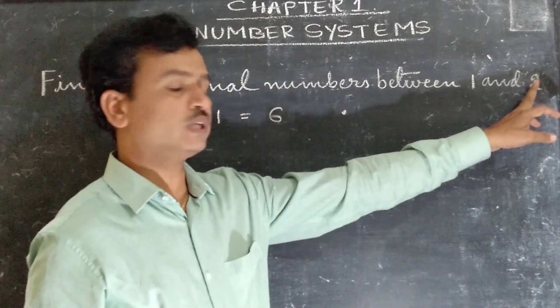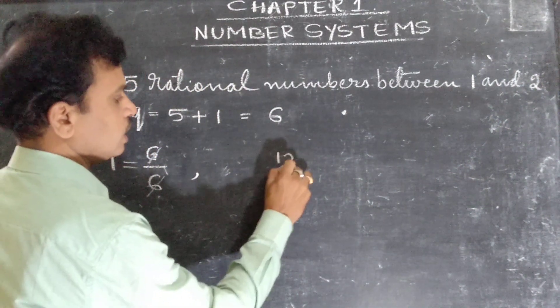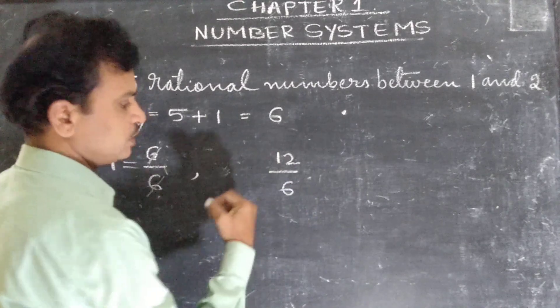That means the next one is what is here? 2. How will we get 2? Here 12 divided by 6 we should take.